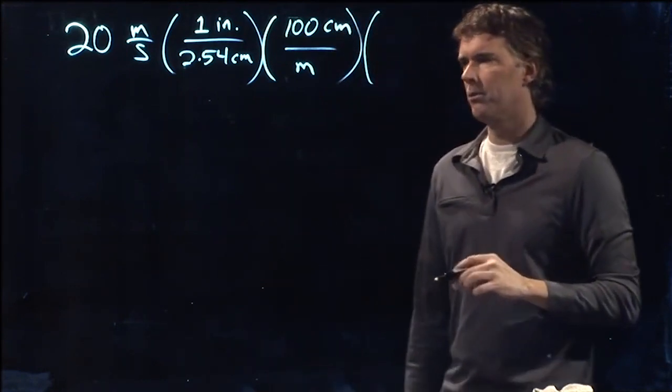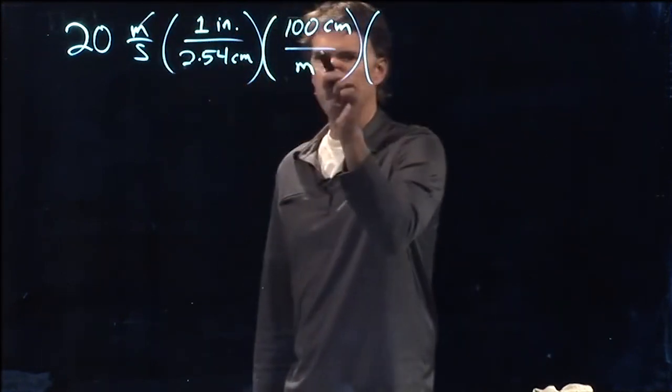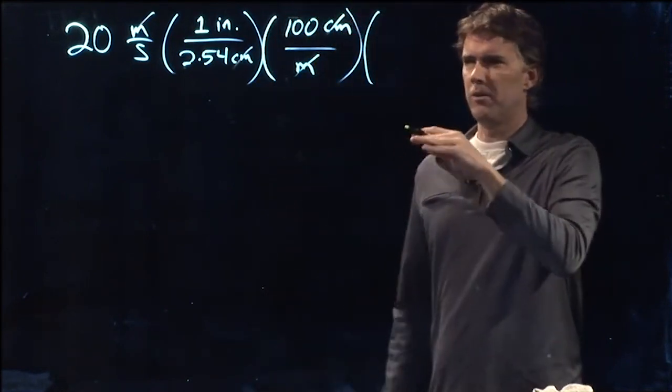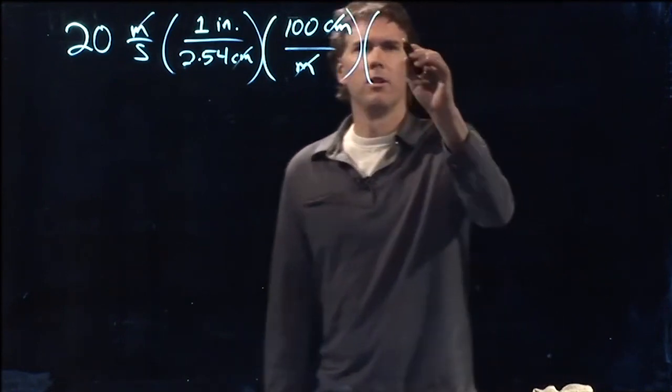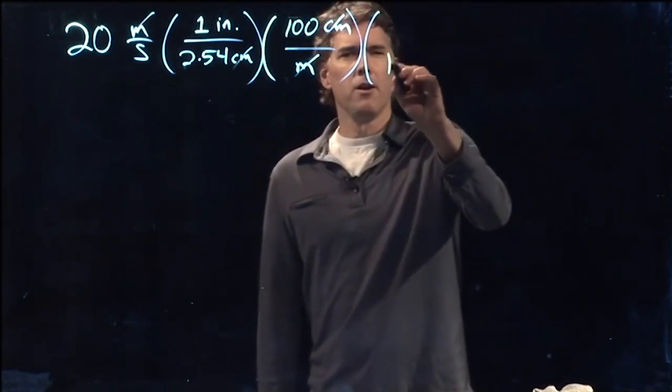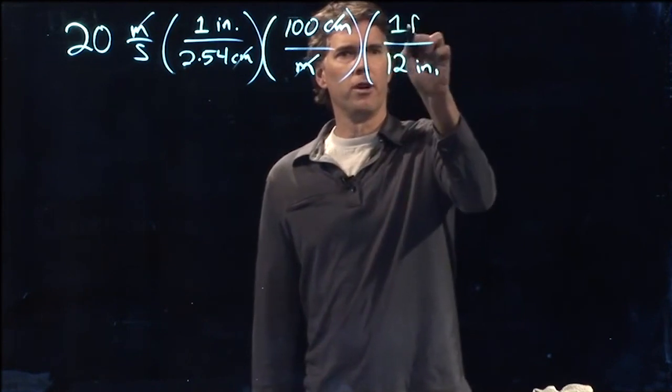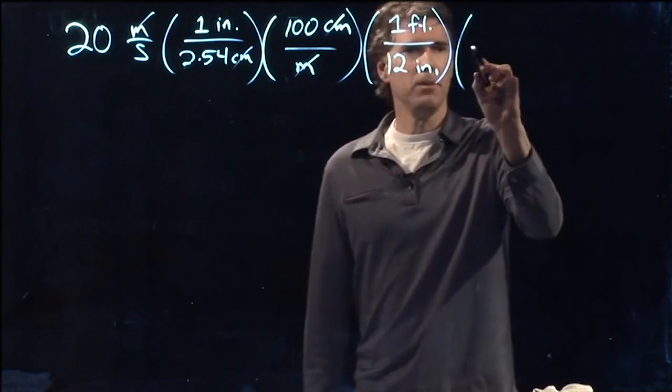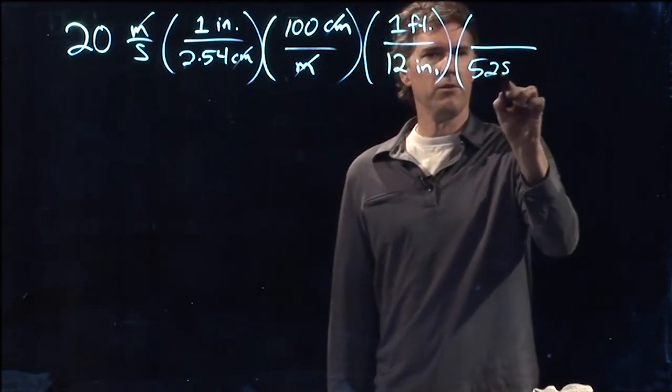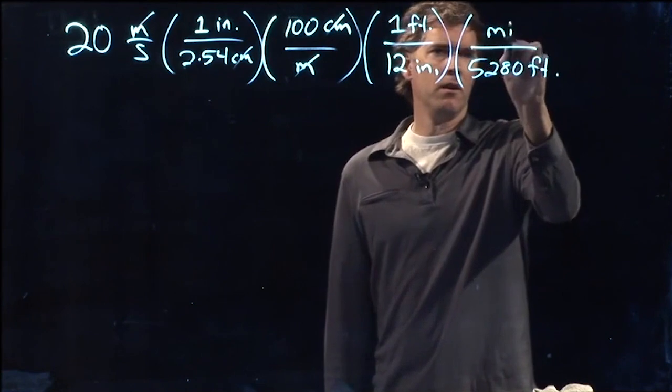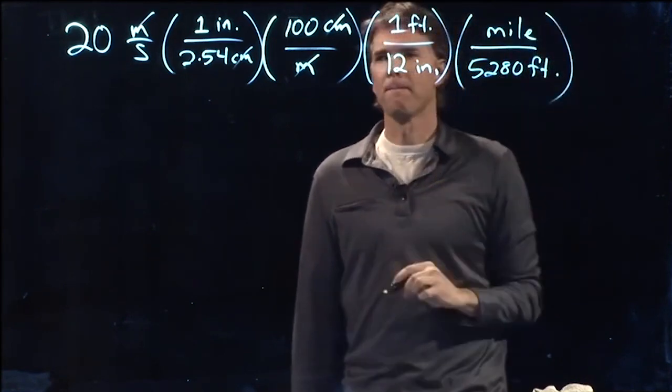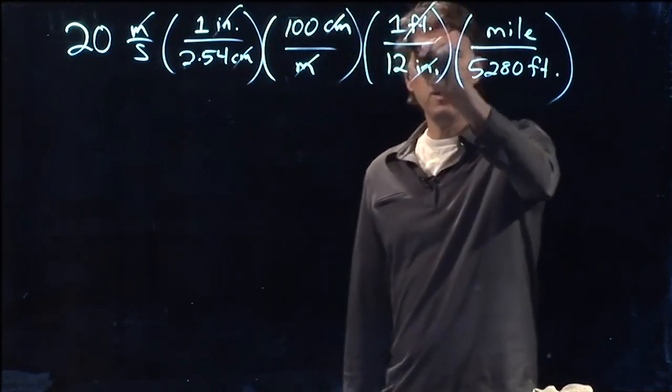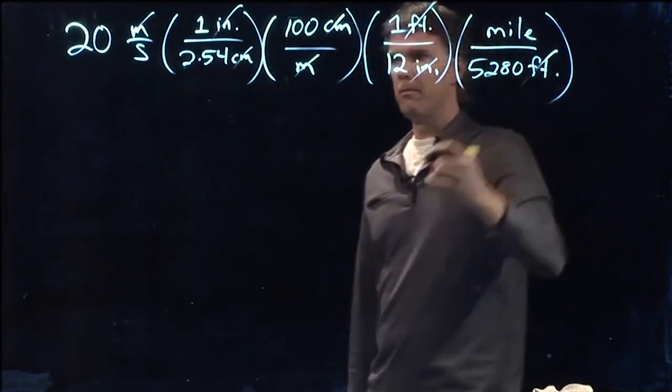Then what are we left with? Well, we can cross out the meters. We can cross out the centimeters. And now we're left with inches and somehow we got to get inches into miles. So we remember that there are 12 inches in one foot. And maybe you remember there are 5,280 feet in a mile. So inches crosses out with inches, feet crosses out with feet, and we're left with miles.